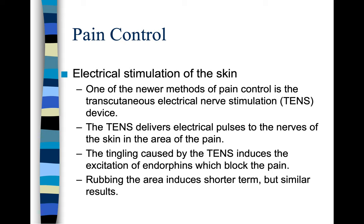I remember when TENS units were first developed — I was working in a rural health clinic in Oklahoma between 1991 and 1994. We were distributing opiates a lot for workers with back and shoulder problems. The TENS unit was a godsend. In the beginning it was pretty expensive and required a doctor's prescription, but now you can buy them over the counter. The TENS delivers electrical pulses to the nerves of the skin in the area of the pain. The tingling caused by the TENS induces the excitation of endorphins, which blocks the pain. Rubbing the area induces shorter-term but similar results.